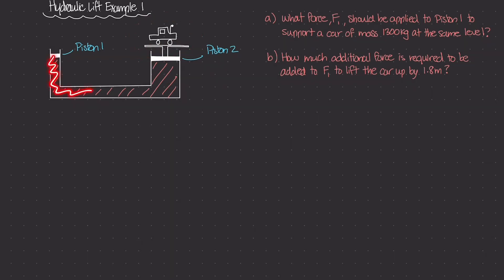Inside of this hydraulic lift is an incompressible fluid, and the mass density for this liquid or fluid contained inside of the hydraulic system — I'll just call it rho — that is going to be 900 kilograms per meter cubed. We'll need this value in a later problem.